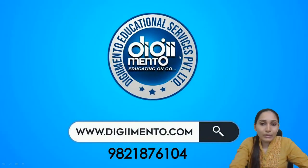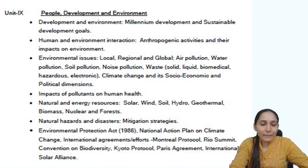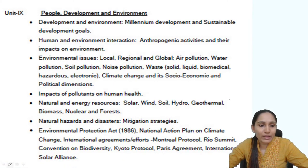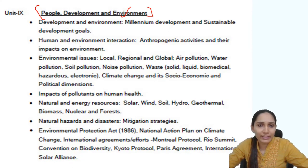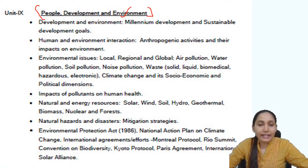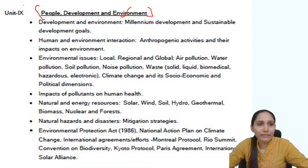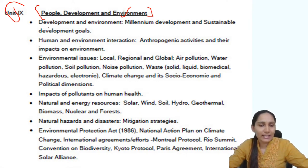I'll be dealing with paper 1 — specifically unit 9 of paper 1. Unit 9 deals with people, development and environment. We will quickly go through the topics, and then I'll give you an introduction about the NET examination before we go through the subtopics of unit 9.